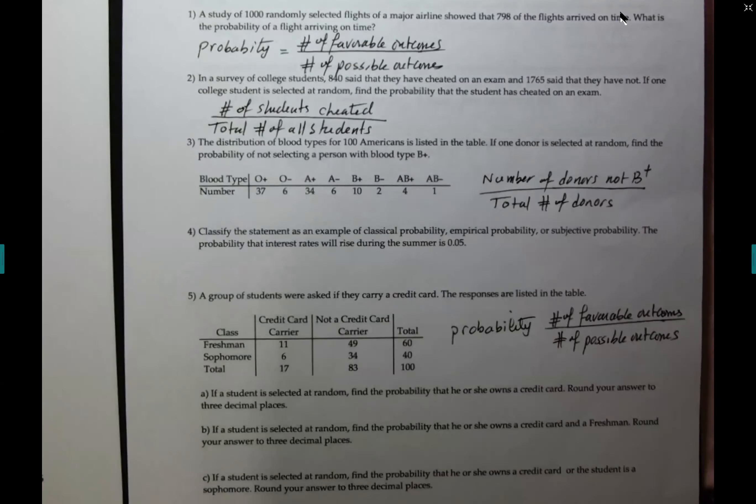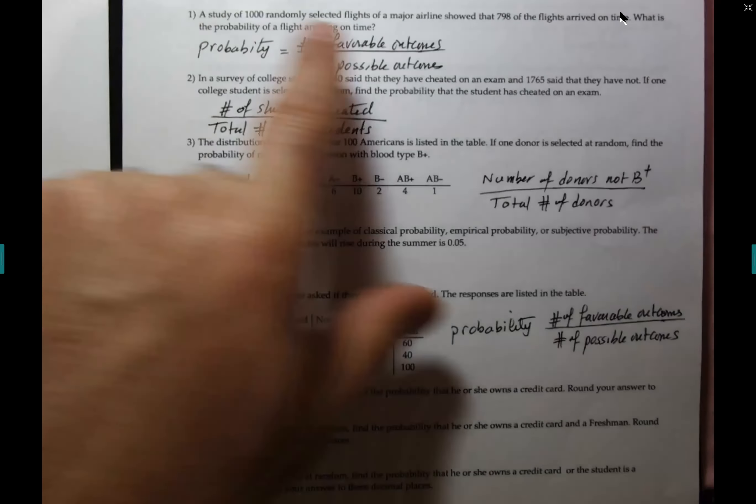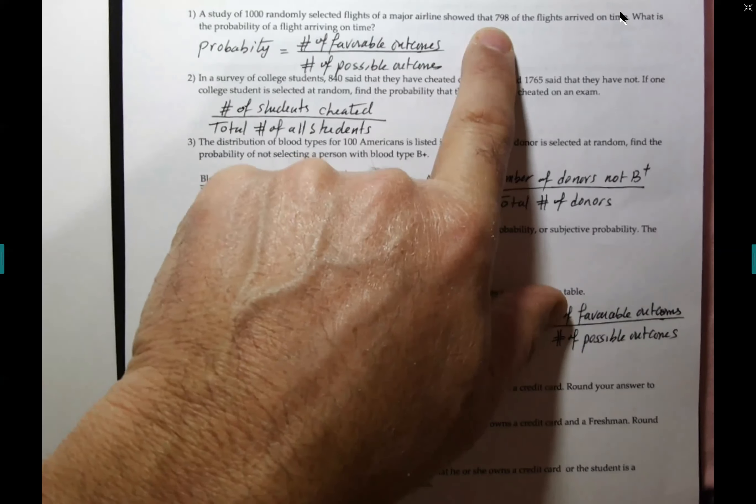What about if you see this question on the test, and I said, what's the probability of flights not arriving on time? What would you do? Let's say I give you this question on Monday, and exact same question, but instead of flights arriving on time, I say flights not arriving on time. So, wouldn't you just take the 1000, subtract 798, and whatever's left? Yeah, you take the 1000, subtract the 798, you will get 202. The answer will be 202 divided by 1000.